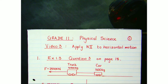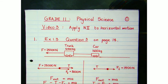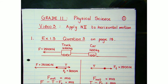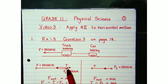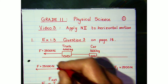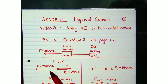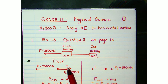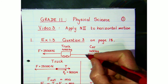The first thing we need to do is identify all the forces acting on each vehicle in the plane in which it's accelerating. These vehicles are accelerating in the horizontal plane, so we look at forces in the horizontal plane. There is a forward force of 25,000 Newtons on the truck from the engine, and a backward force from the tension in the chain.